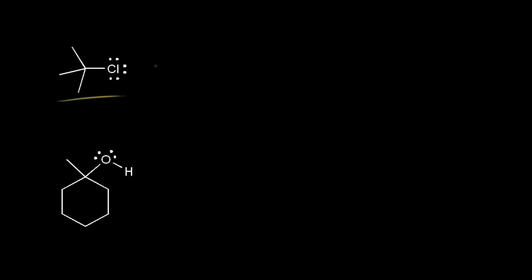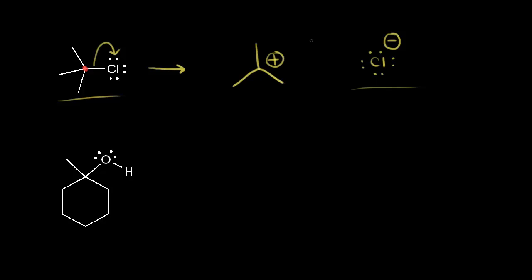Both SN1 and SN2 reactions need good leaving groups; however, the SN1 reaction is even more sensitive. So let's look at tert-butyl chloride reacting via an SN1 mechanism. The first step is loss of a leaving group — if these electrons come off onto the chlorine, we form the chloride anion with a negative one formal charge. We just saw on our pKa table that the chloride anion is a stable conjugate base and therefore a good leaving group. The carbon gets a plus one formal charge, and we form a tertiary carbocation. Since this is the rate-determining step of the SN1 mechanism, the formation of a stable anion — a good leaving group — helps the SN1 mechanism occur.